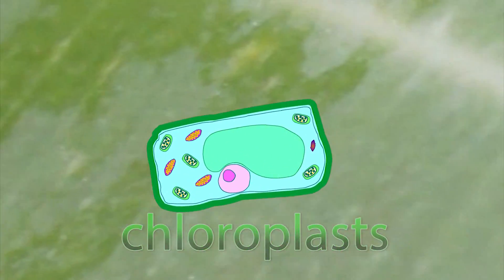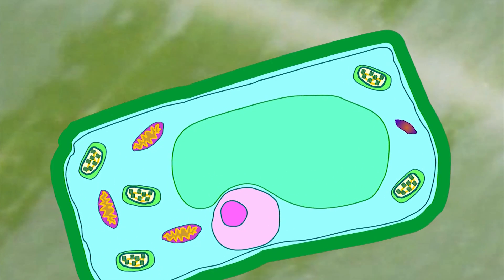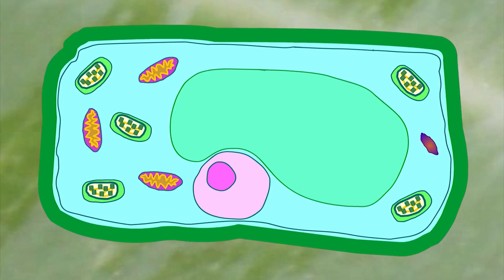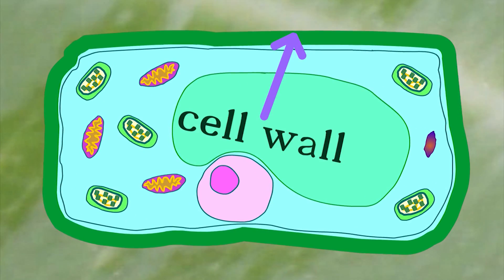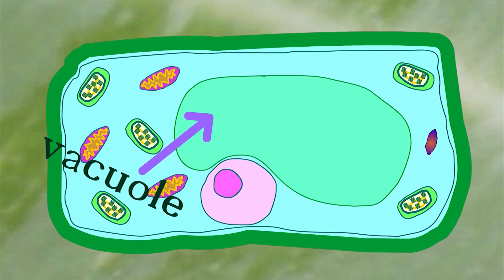By using revolutionary 2D CGI, we can look inside a leaf at the actual plant cells it's made up of. Plant cells are very similar to animal cells, except they have a hard cell wall and a vacuole inside which is filled with sap.